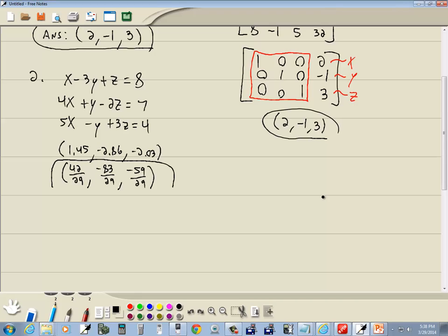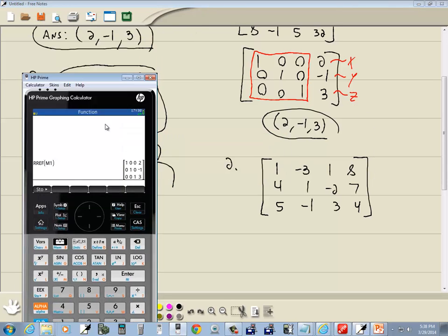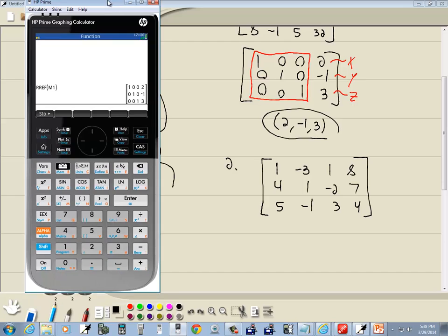Now let's look at number 2. I won't write the equation down again, but this is the one we're working with. So I want to write down the matrix that goes along with it. I'll drop my variables and equals and keep the numbers and our signs. So I got 1, negative 3, 1, 8. 4, 1, negative 2, 7. 5, negative 1, 3, and 4. Let me check my numbers. 8, 7, 4. 1, negative 2, 3. Negative 3, 1, negative 1. 1, 4, 5. That looks right.